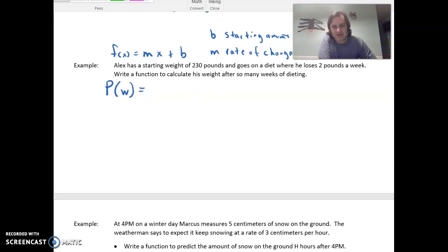So he has a starting weight of 230 pounds, so that's the b. And he's going to lose 2 pounds per week, so that's going down by 2 every week. So our p of w could be negative 2w plus 230, which means that it calculates how much weight he has lost and then puts that with the 230 to net it up.